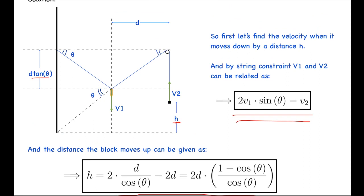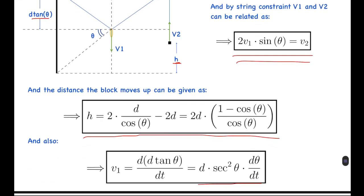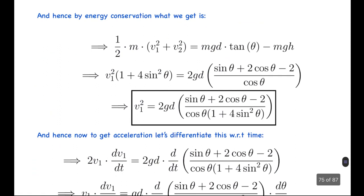So we got these two relations. Now, by energy conservation, the kinetic energy equals the change in potential energy. ½m(v₁² + v₂²) = mgd tan θ - mgh. Substituting v₂ = 2v₁ sin θ, we get v₁²(1 + 4 sin² θ) = 2gd times this expression. Finally, we get v₁² = 2gd × (sin θ + 2 cos θ - 2) / [cos θ(1 + 4 sin² θ)].